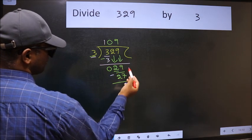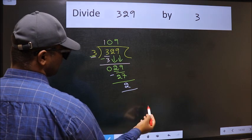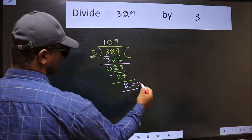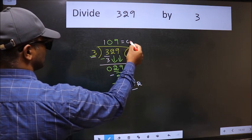No more numbers to bring it down. So we stop here. This is our remainder and this is our quotient.